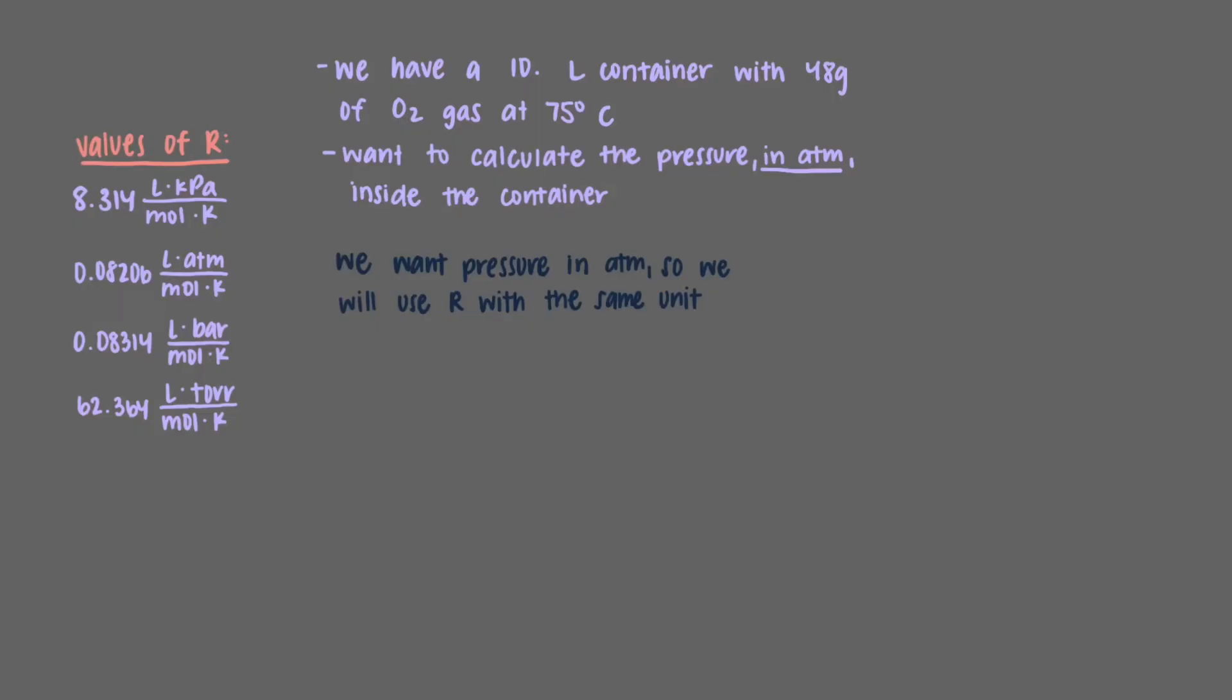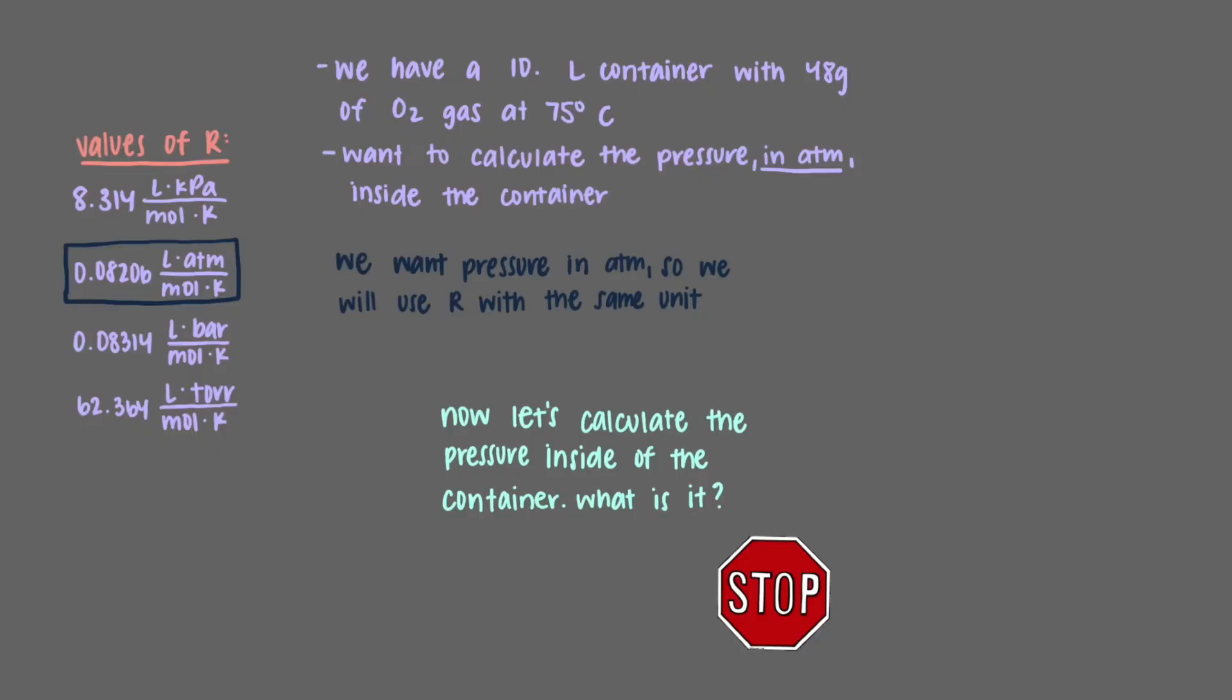Because we want the pressure in atmospheres, we will use the r with the same unit: 0.08206 liters times atmospheres over mole times kelvin. Now let's calculate the pressure inside of the container.